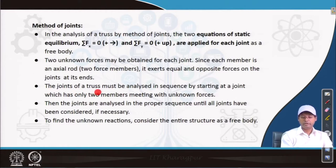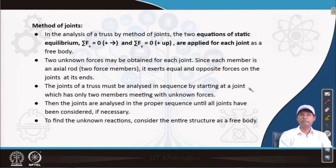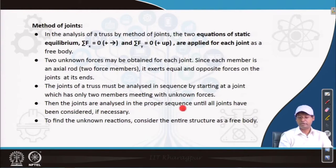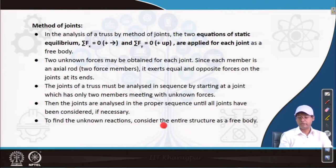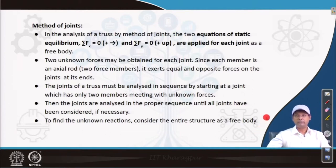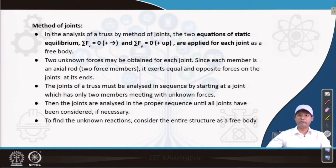The joints of the truss must be analyzed in sequence, starting at a joint which has only two members meeting with unknown forces. If we have more unknown members we would not be able to solve for all forces at that joint. The joints are analyzed in proper sequence until all joints have been considered. To find the unknown reactions, consider the entire structure as a free body — finding support reactions first makes it easier to find the member forces.